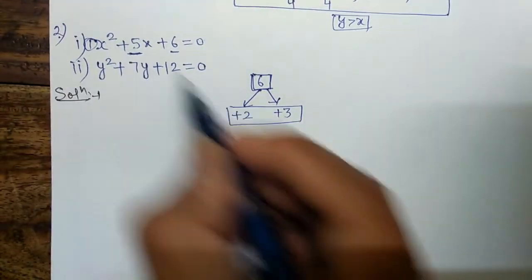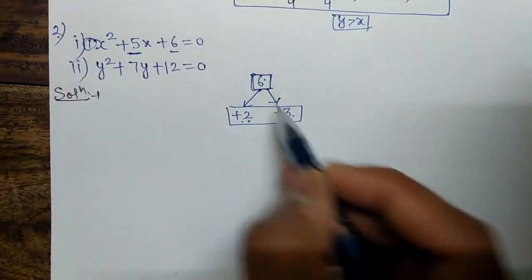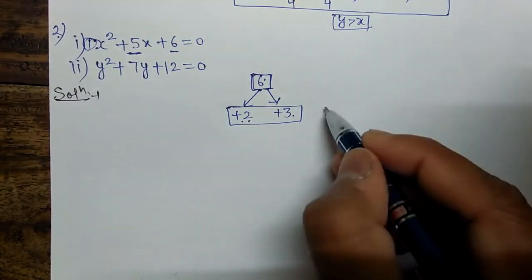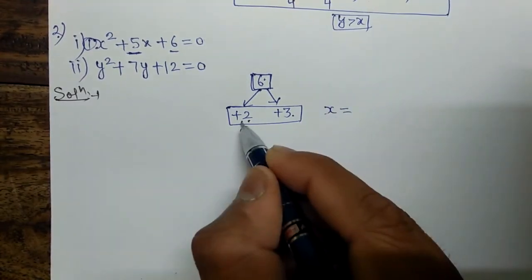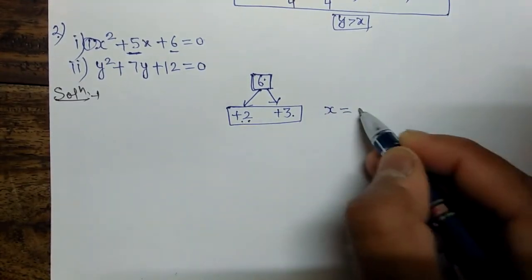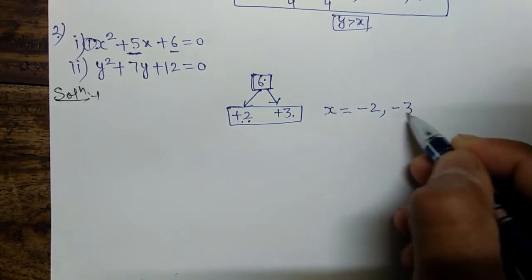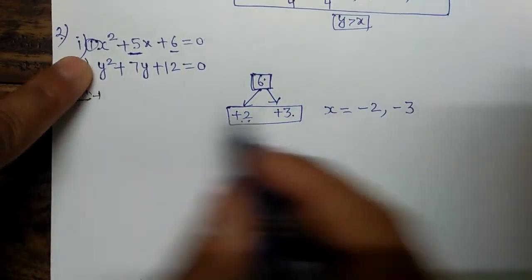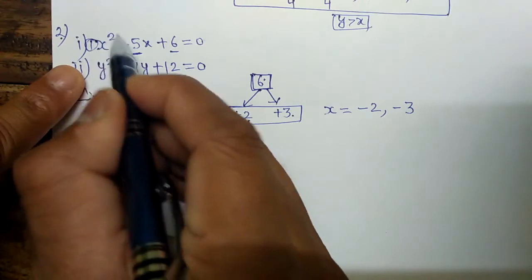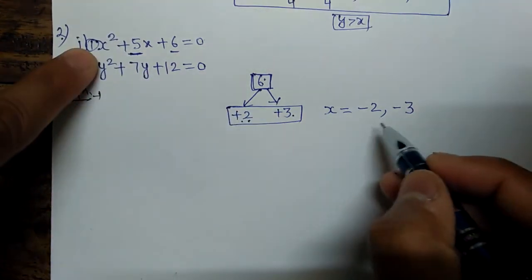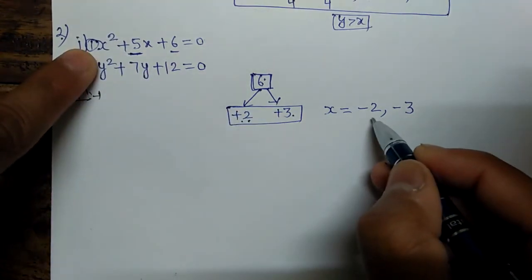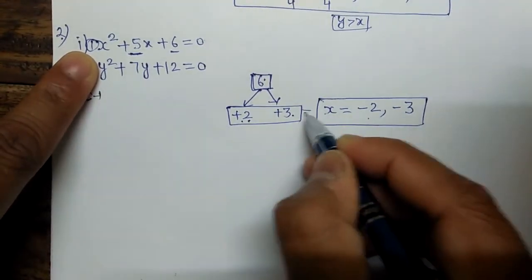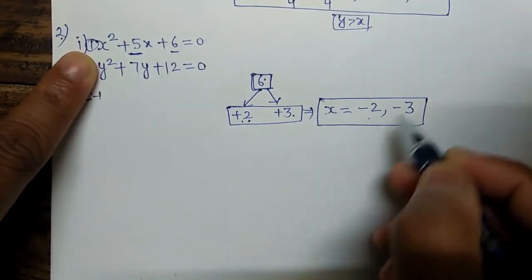So the value of x will be the opposite sign: x = -2 and x = -3. Divided by the coefficient of x², which is 1, so there is no effect. The values are x = -2 and x = -3.